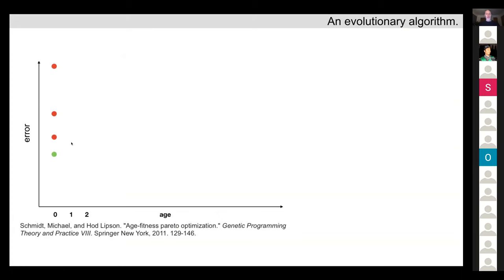I'm going to spend a couple of minutes on some technical details of how modern evolutionary algorithms work. The one we use in my lab is called Age Fitness Pareto Optimization, or AFPO. AFPO is a significant advance over genetic algorithms, and it tends to find better robots or better solutions than a genetic algorithm does.